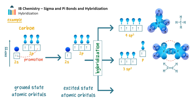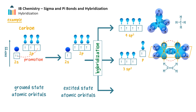In ethene, each carbon is sp2 hybridized. Two of the sp2 hybrid orbitals in each carbon atom can form a sigma bond with a hydrogen atom, and the third bonds by a sigma bond to the other carbon atom. There are three electron domains around each carbon atom, and this forms a trigonal planar shape around each carbon, and a planar molecule overall. However, the unhybridized p orbital in each carbon atom is perpendicular to the plane of the molecule. Each contains one electron, and they both overlap side-on to form a pi bond.